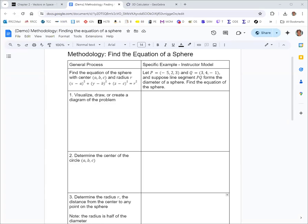In this video we're going to see how to find the equation of a sphere. The instructor model gives us point P with coordinates (-5, 2, 3) and point Q with coordinates (3, 4, -1), and we know that the line segment from P to Q forms a diameter of the sphere.